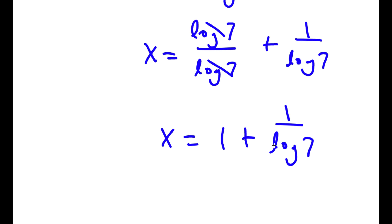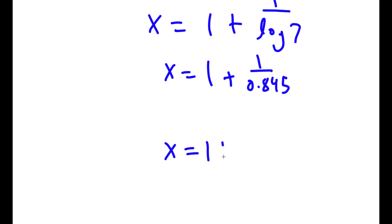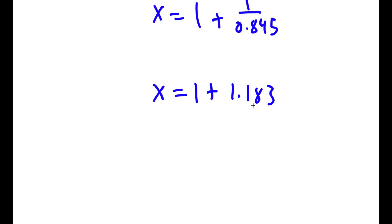To get the value of log 7, you can use a calculator. Log 7 is approximately 0.845. So 1 divided by 0.845 is approximately 1.183. Therefore, 1 plus 1.183 equals 2.183. So x is equal to approximately 2.183. This is my answer.